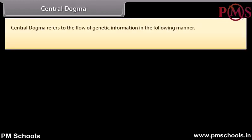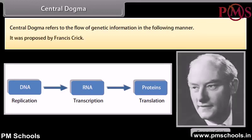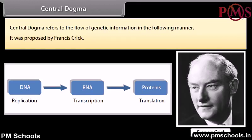Central Dogma refers to the flow of genetic information. It was proposed by Francis Crick.